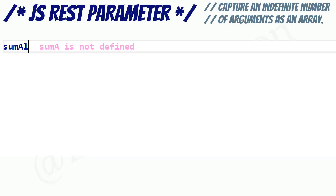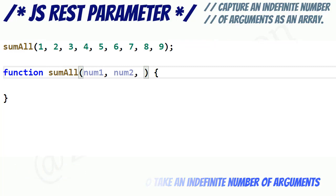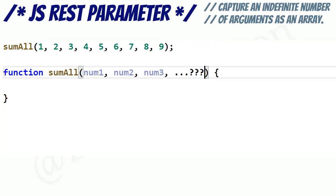Suppose we wanted to write a function called sumAll that takes an indefinite number of numeric arguments. It could take one, two, nine, or even more arguments. We can't specify the parameters explicitly, since we won't always know how many arguments we'll have, so we'll need another approach.